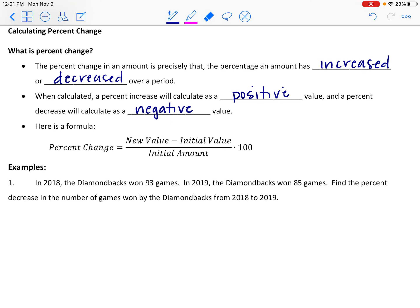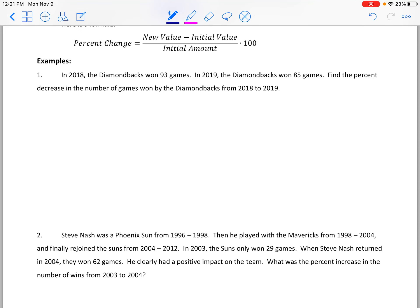Let's look at some examples. I went a little sports theme for these first few. In 2018 the Diamondbacks won 93 games, and in 2019 the Diamondbacks won 85 games. I didn't want to pull up the 2020 data because their season was abbreviated due to COVID. We're asked here to find the percent decrease in the number of games won by the Diamondbacks from 2018 to 2019.